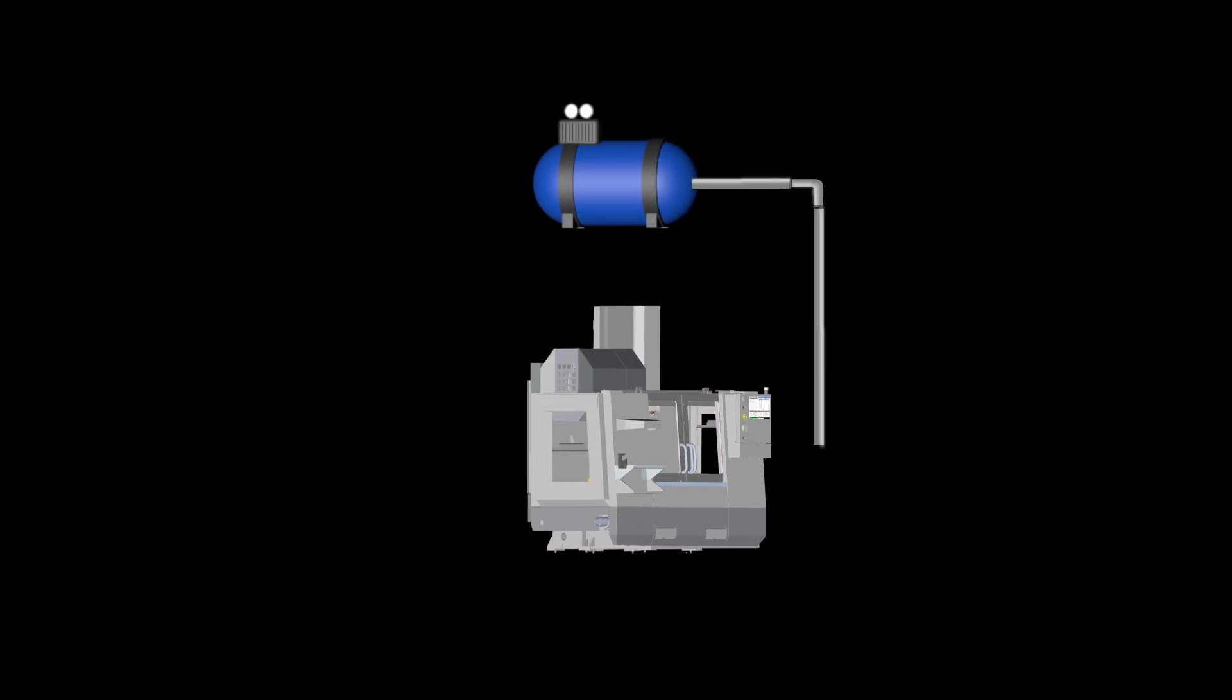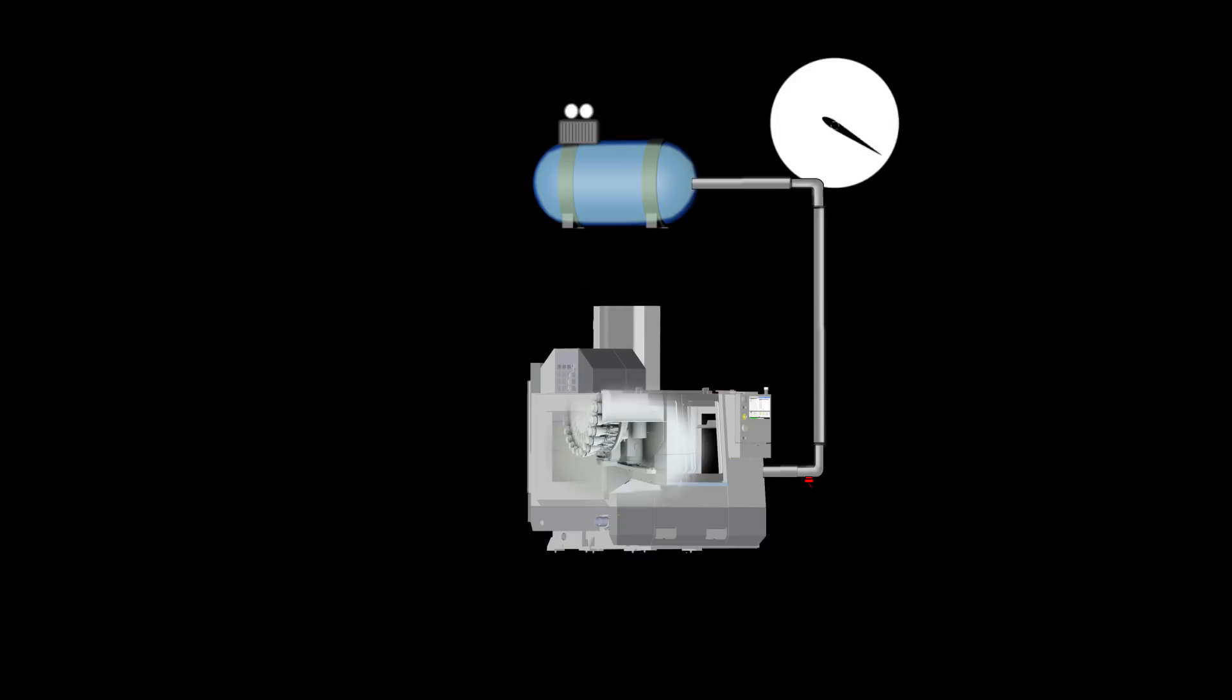This shop has installed a compressor that matches the requirements in the pre-installation guide. The compressor has the correct volume of air for one machine and maintains the correct air pressure. The pressure drops slightly as the machine cycles through a tool change but quickly builds back up.